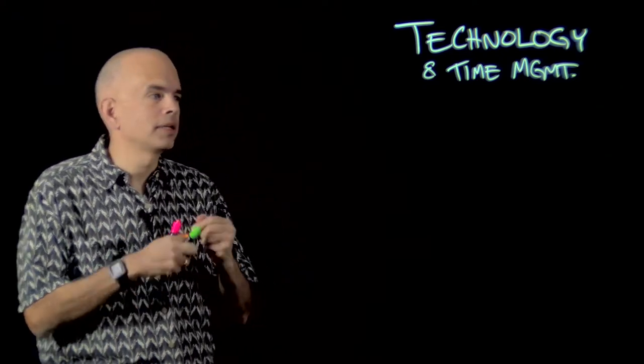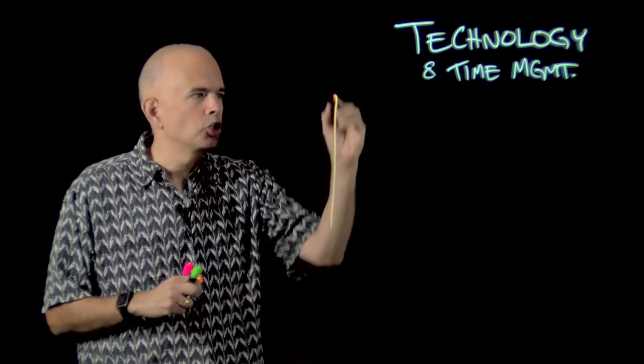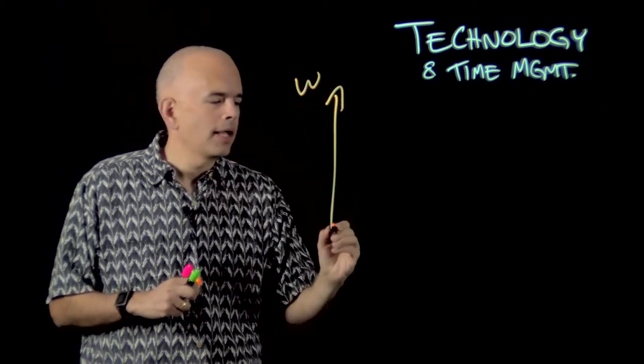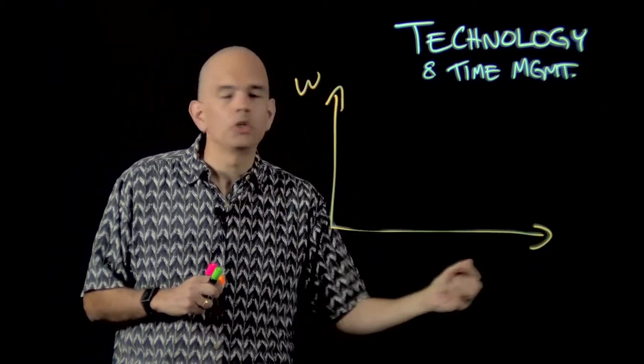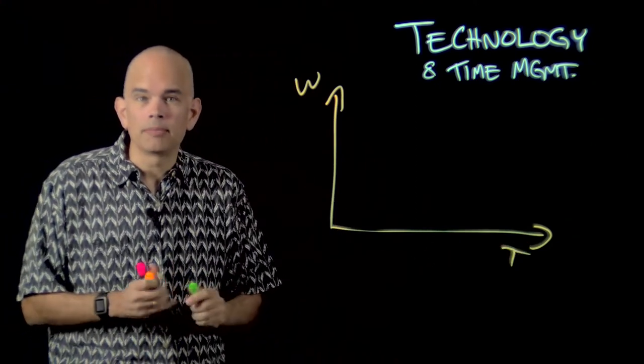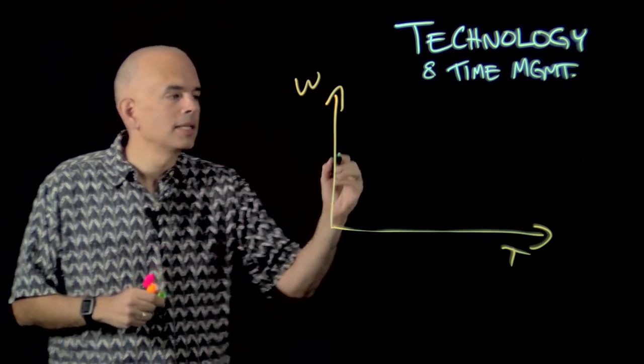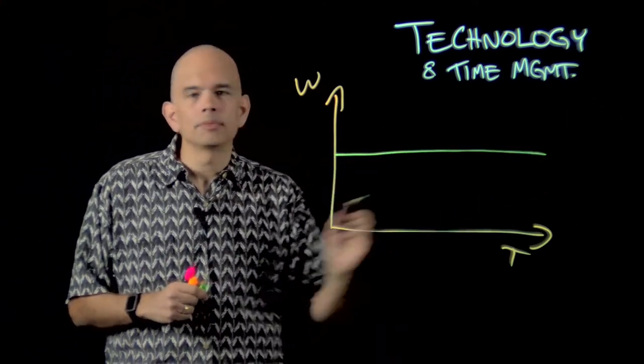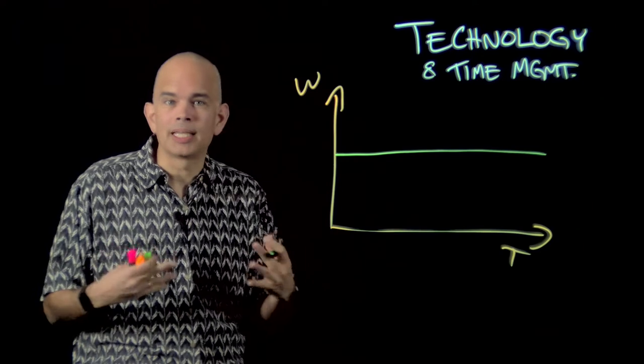For any task that you're doing, there is a certain amount of work that you have to do, and you do that work in a given amount of time. Probably given the way that you're used to doing things, the amount of work per time is pretty much constant, right? We've always been doing the same things.